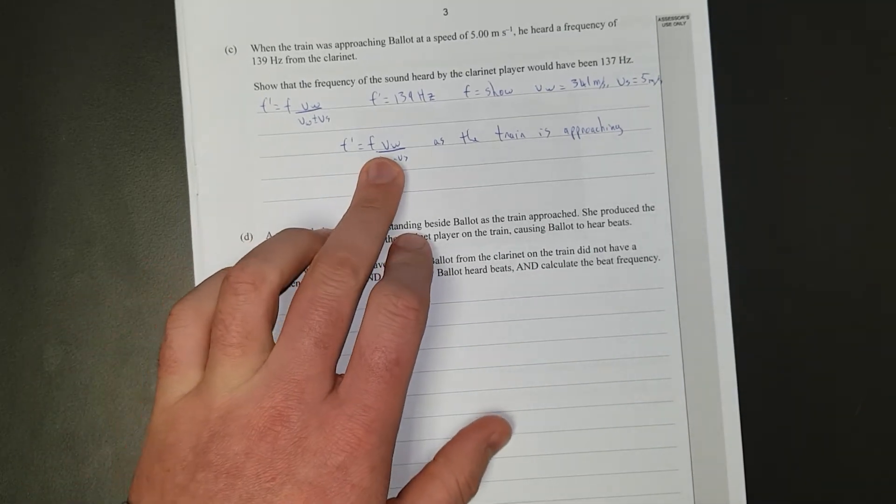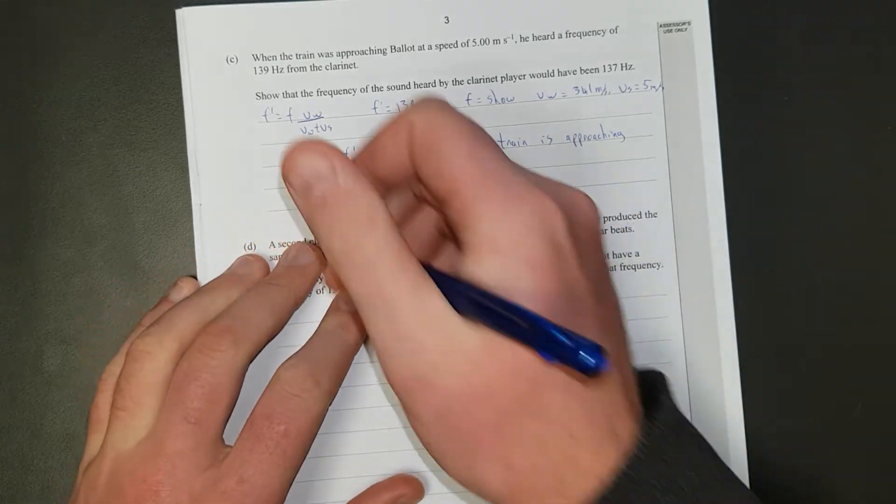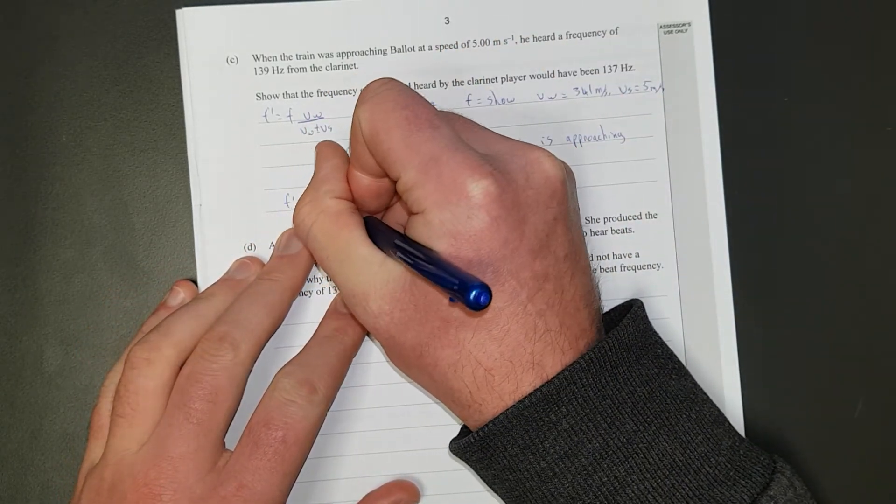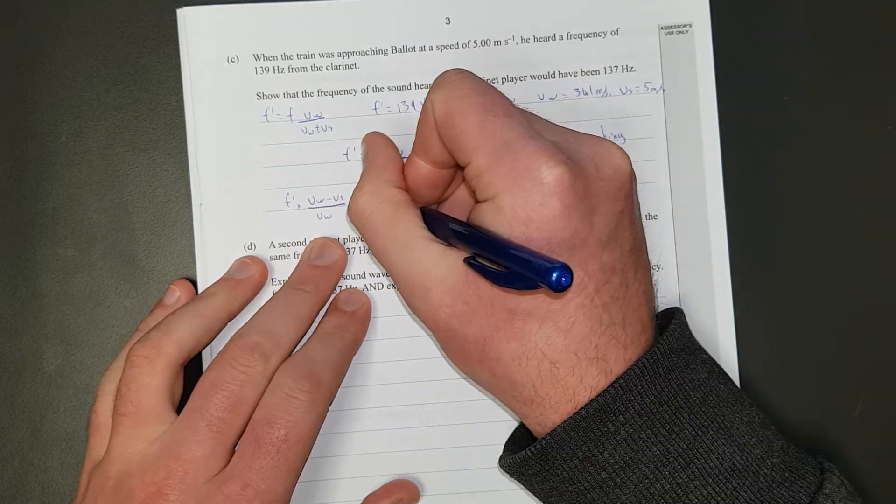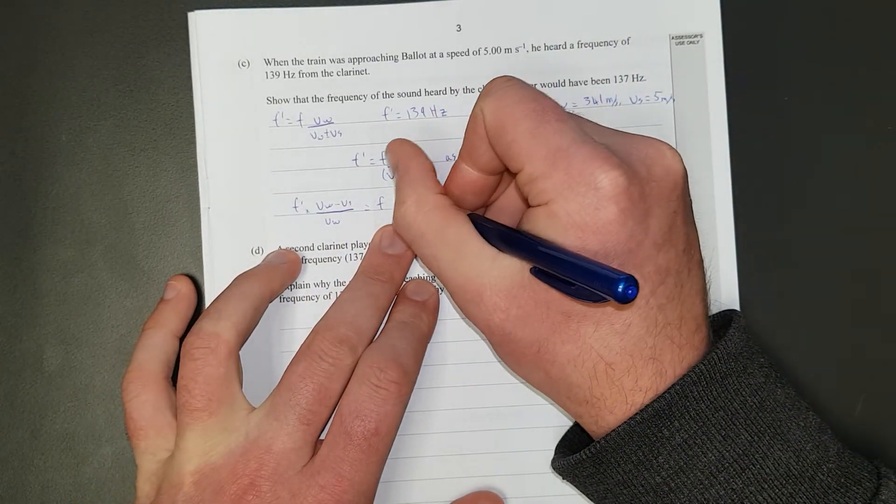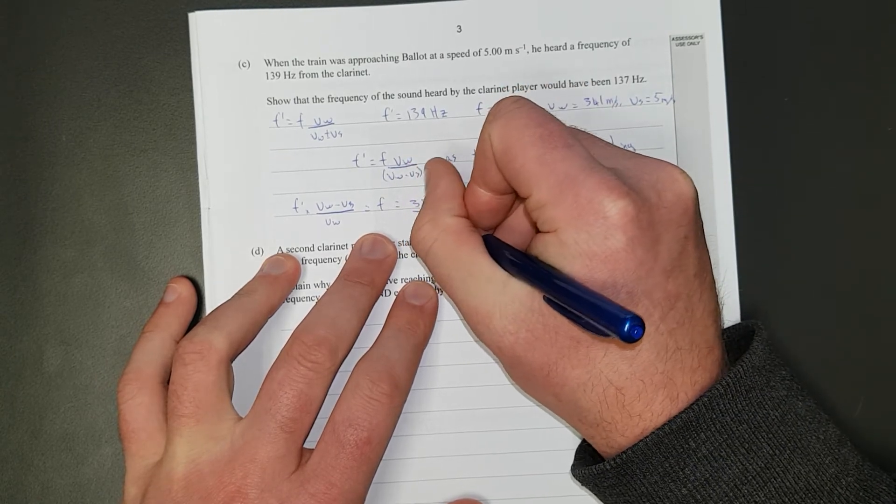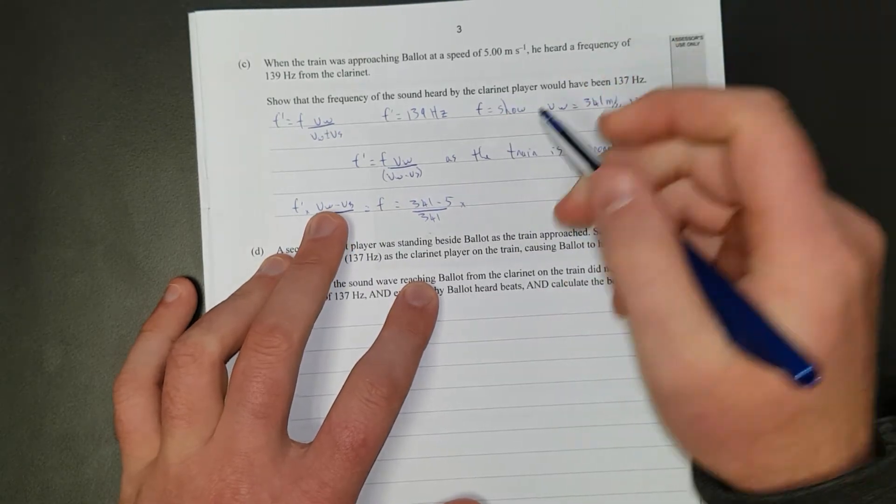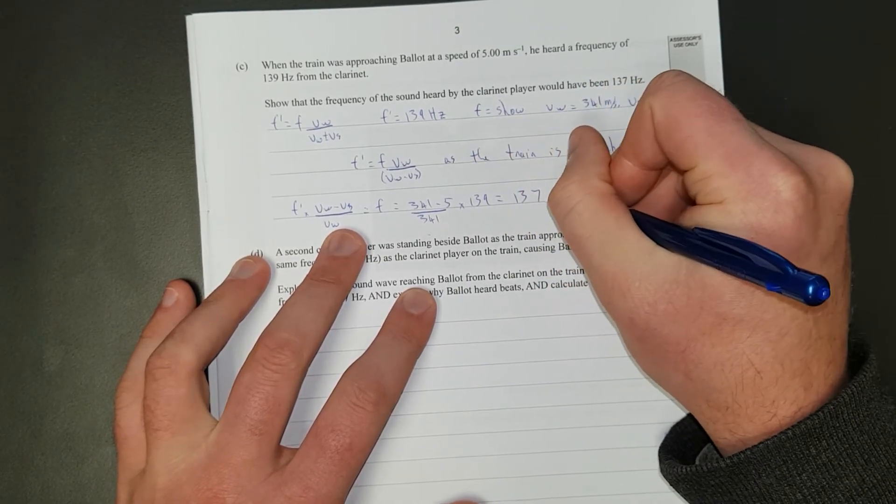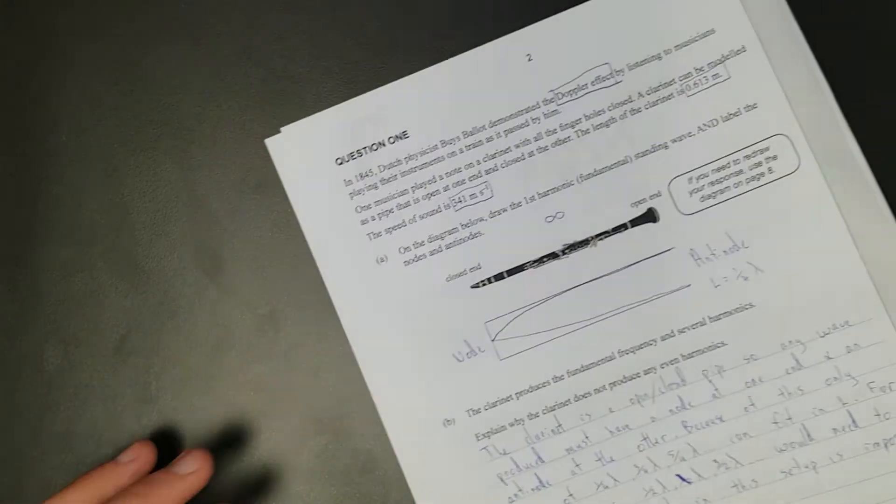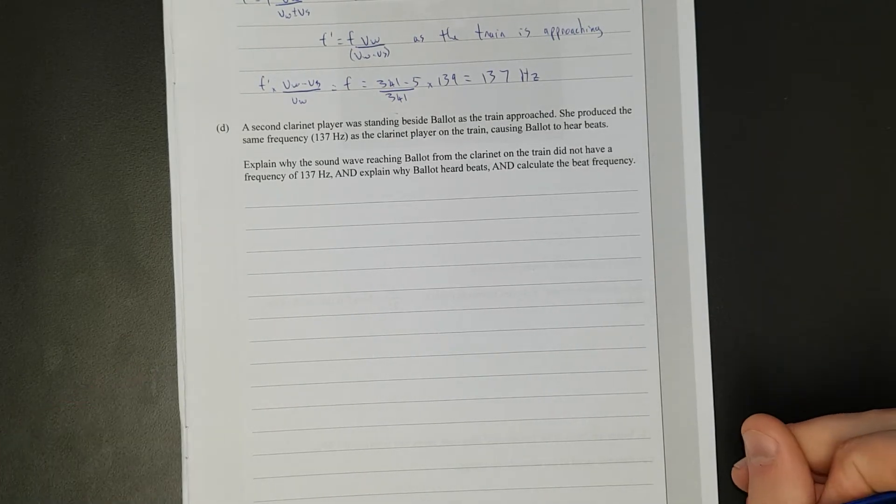Right, so let's just rearrange for F. That's going to be easy. So I'm going to move this. I'll put brackets around this. Move that up top and move the V wave down below. So we're going to get F prime times V wave minus V source divided by... I'm going to move that V wave underneath. And that is going to be equal to F. And that is equal to... Let's put some numbers in. 341 minus 5 divided by 341 times 139. And that does indeed equal 137 hertz. 3 significant figures.